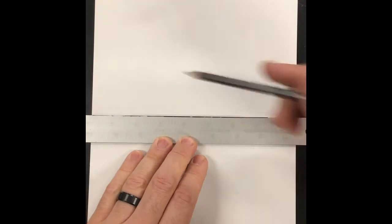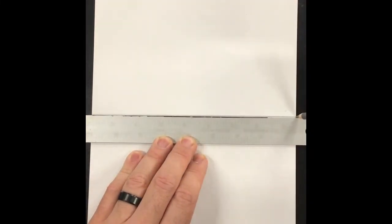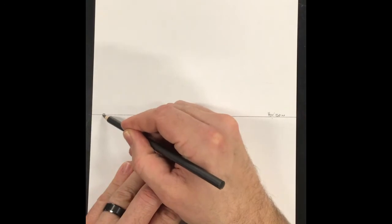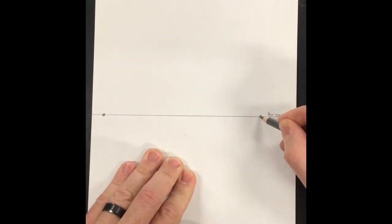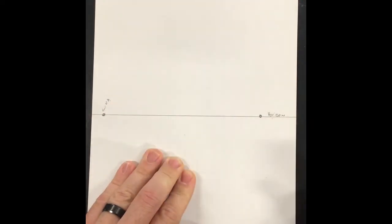With your ruler, the first step is to create a horizon line—that is the point where the sky meets the ground. Your horizon line is going to go across the center of your page. You can even label it 'horizon' in your practices. You're then going to make two points, one on the left and one on the right. These are called vanishing points.